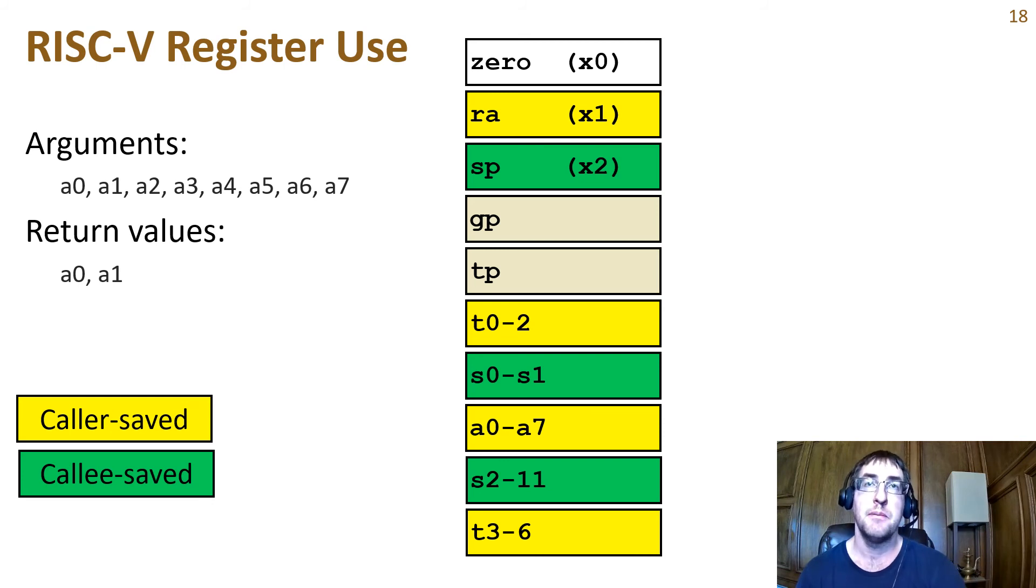Sometimes a function will do that by saving a callee saved register like s0 at the start of the function and then using s0 to save some caller saved registers that need to survive a function call.